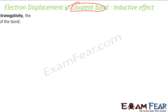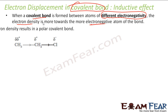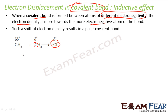Having understood the electronegativity chart, let's start with the inductive effect. Inductive effect is nothing but displacement in a covalent bond — it is due to difference in electronegativity. Electron density is more towards the more electronegative atom. For example, chlorine is more electronegative than carbon, so chlorine attracts electrons toward itself, chlorine develops a partial negative charge, and carbon develops a partial positive charge, resulting in a polar covalent bond.